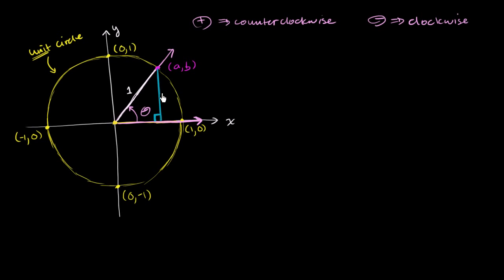What is the length of this blue side right over here? You could view this as the opposite side to the angle. This height is the exact same thing as the y-coordinate of this point of intersection, so this height is going to be equal to b. Now, by the same logic, what is the length of the base of the right triangle? This is going to be the x-coordinate of this point of intersection — this whole length between the origin and that point is of length a.